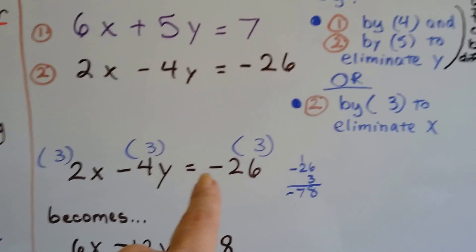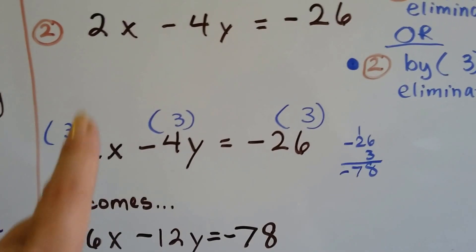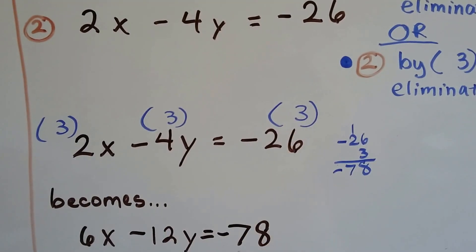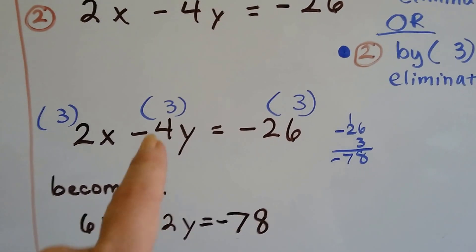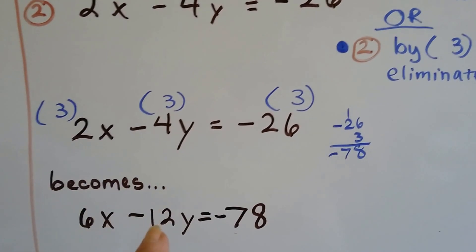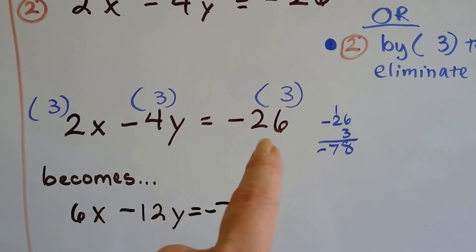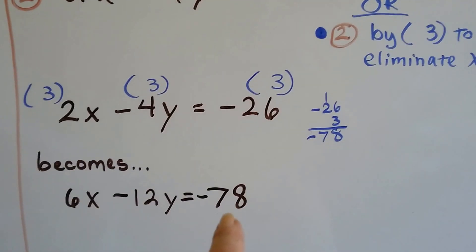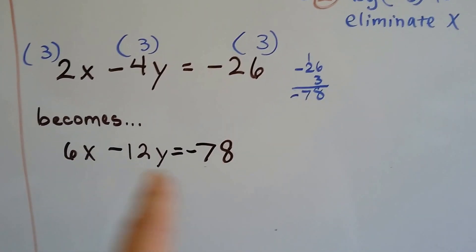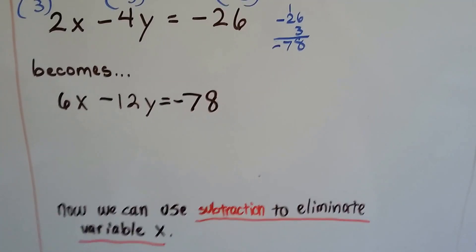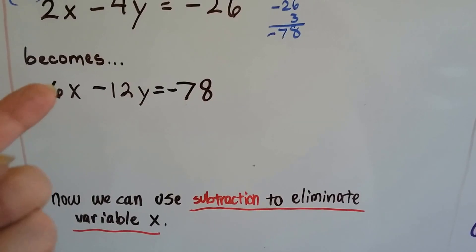So we do that. We have 2x minus 4y equals negative 26, and we multiply each term by 3. That becomes a 6x. 3 times negative 4 is negative 12y, and negative 26 times 3 is a negative 78. And now we have this as our second equation. Now we can use subtraction to eliminate this variable x.